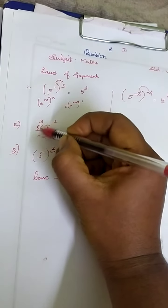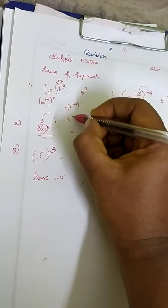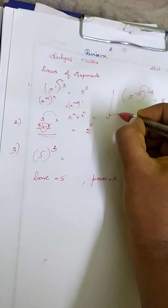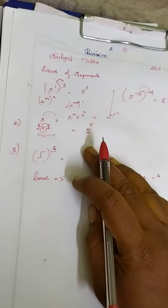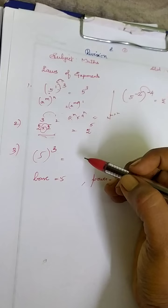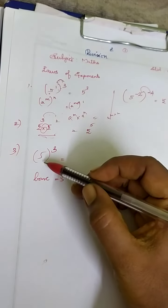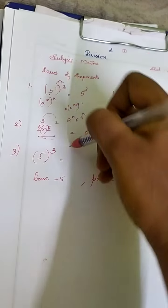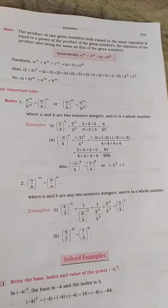When you have the same base with multiplication and two different powers, the formula is a power m into a power n equals a power m plus n. You add only the powers and keep the base common. So 5 is common, and adding the powers 3 plus 2 gives 5, so the answer is 5 power 5. If they ask what is the base in 5 power 3, the base is 5 and the power — also called the index — is 3. The index equals 3.